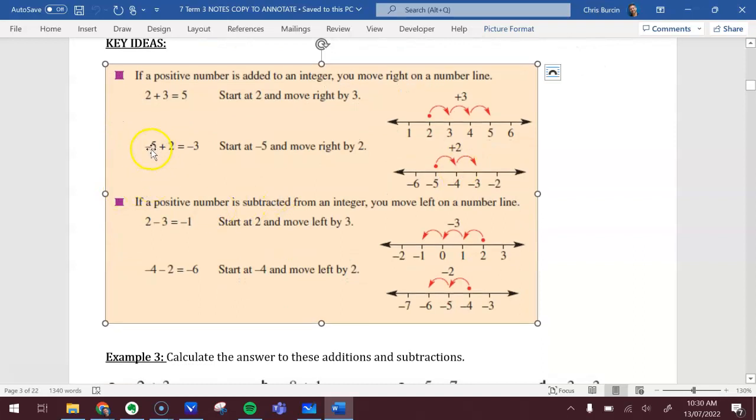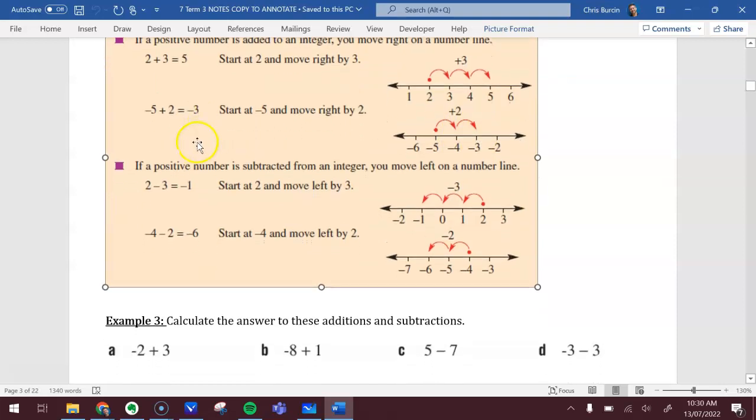If you have a negative number, start at that place, and then you're adding on the positive number. So starting from negative 5, remember your number line doesn't have to start or have zero in the middle, it can start wherever you need it to, as long as they're evenly spaced. So negative 5 plus 2, I will move across 1, 2, and the answer then is negative 3. So I'm still on the negative side, even though I've added 2.